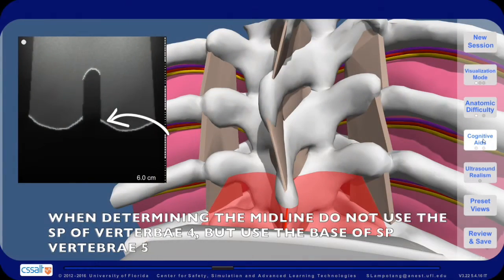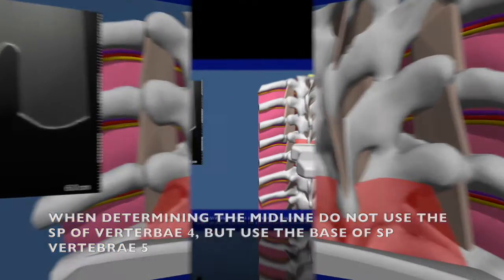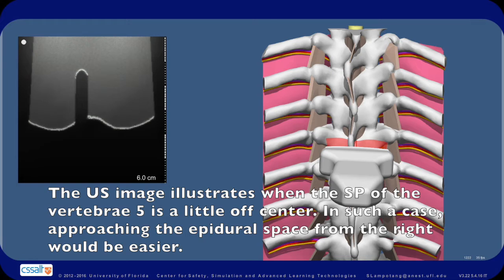When determining the midline, do not use the spinous process of vertebrae 4, but use the base of the spinous process of vertebrae 5. The ultrasound image illustrates when the spinous process of vertebrae 5 is a little off-center. In such a case, approaching the epidural space from the right would be easier.